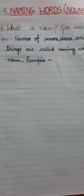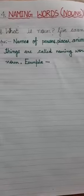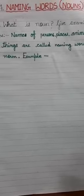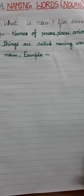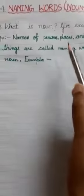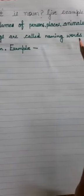Students, today we learn naming words or nouns. First, what is a noun? Give example. Nouns are names of persons, places, animals, and things. These are called naming words or nouns.